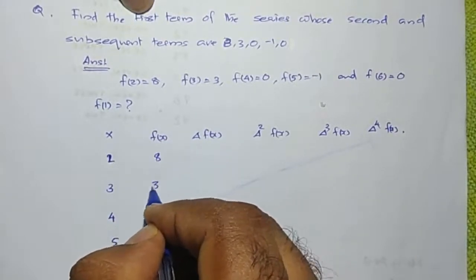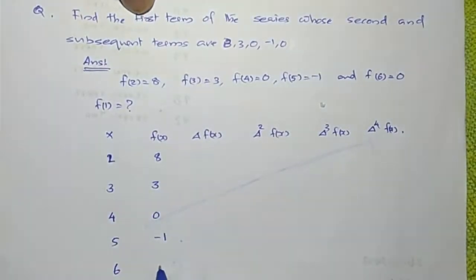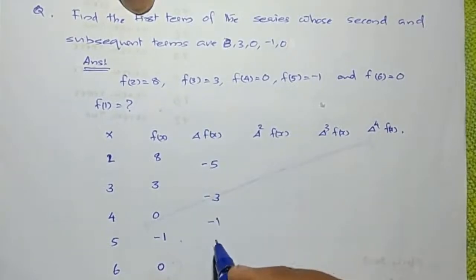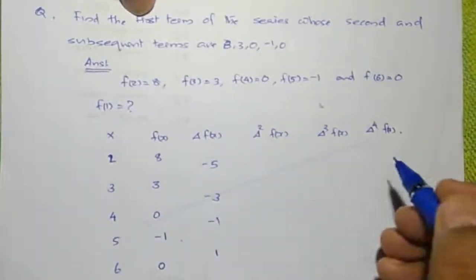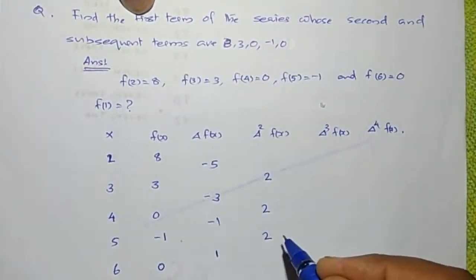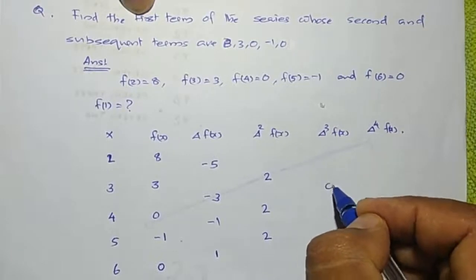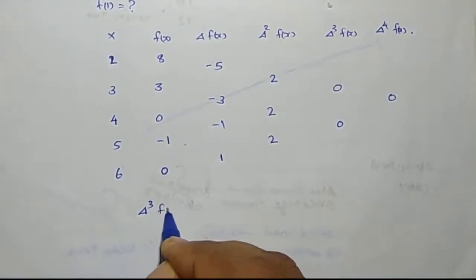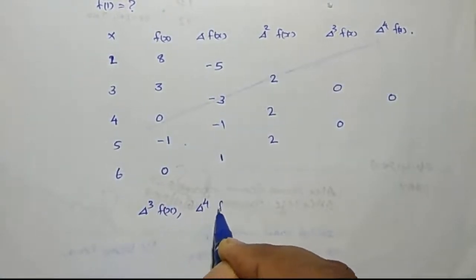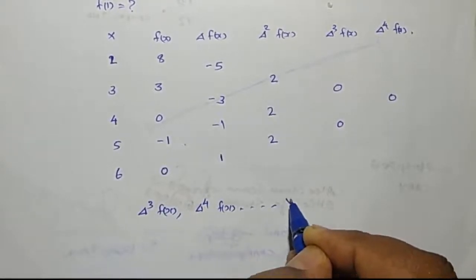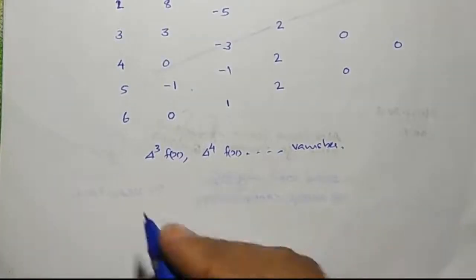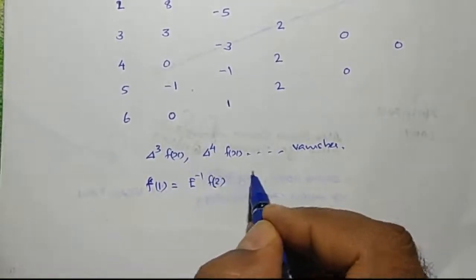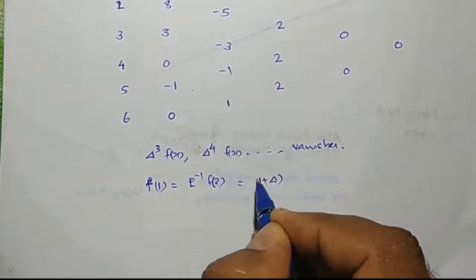The x values are 2, 3, 4, 5, and 6 with corresponding y values 8, 3, 0, minus 1, and 0. The first differences delta f of x are minus 5, minus 3, minus 1, and 1. The second differences delta squared f of x are 2, 2, 2. The third differences delta cubed f of x are 0, 0. So delta to the fourth and higher order differences vanish.